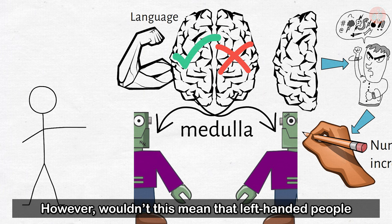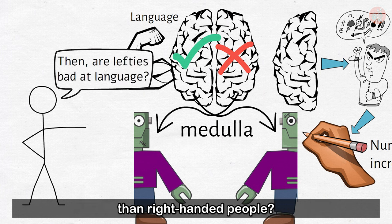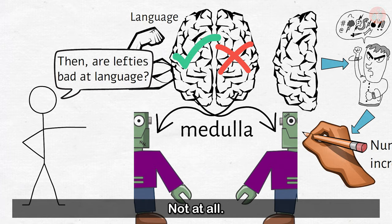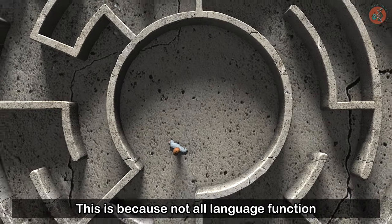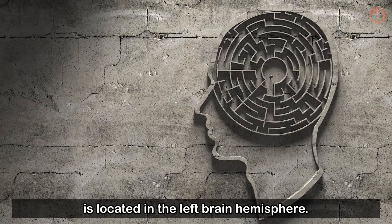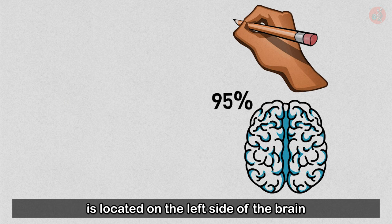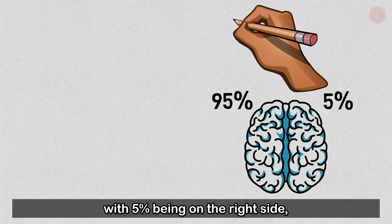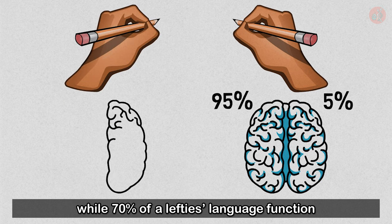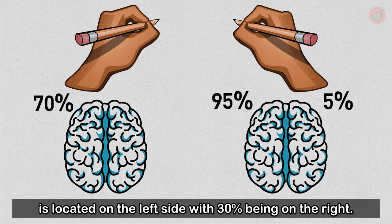However, wouldn't this mean that left-handed people are less adept at using language than right-handed people? Not at all. This is because not all language function is located in the left brain hemisphere. For righties, 95% of language function is located on the left side of the brain, with 5% being on the right side, while 70% of a lefty's language function is located on the left side, with 30% being on the right.